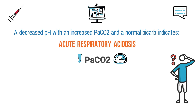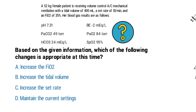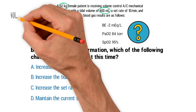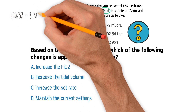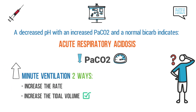The elevated PaCO2 level is causing the pH to be acidotic, meaning we need to blow off some of that excess CO2 by increasing the minute ventilation. There are two ways to increase minute ventilation: increase the rate or increase the tidal volume. The question provides the patient's weight of 52 kilograms and the set tidal volume is 400 milliliters. Calculating: 400 milliliters divided by 52 kilograms equals 8 milliliters per kilogram, which falls within the appropriate range of 5 to 10 milliliters per kilogram.